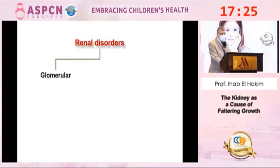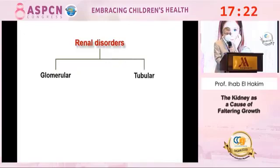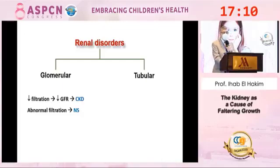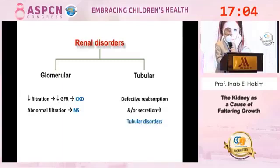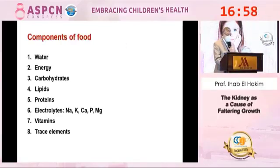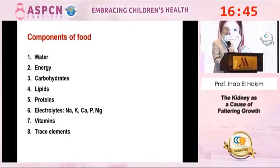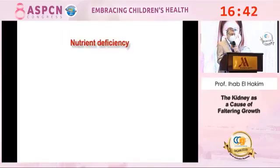Renal disorders can be classified as glomerular or tubular. Glomerular function is filtration, so problems include decreased glomerular filtration rate — chronic kidney disease — or abnormal filtration with protein loss, that is nephrotic syndrome. Tubular function is reabsorption and secretion; defects result in tubular disorders. Food is composed of water, energy, carbohydrates, lipids, proteins, electrolytes, vitamins, and trace elements. We will see what changes occur across different renal disorders.